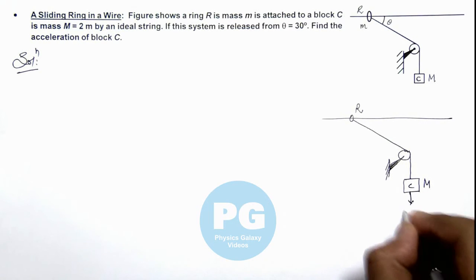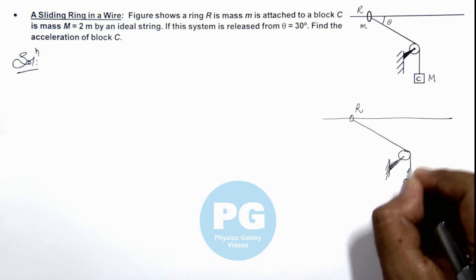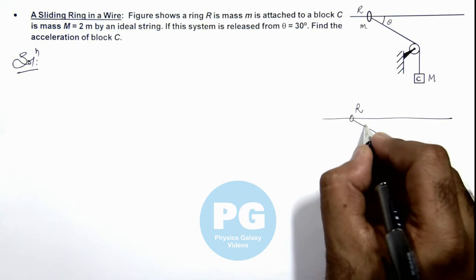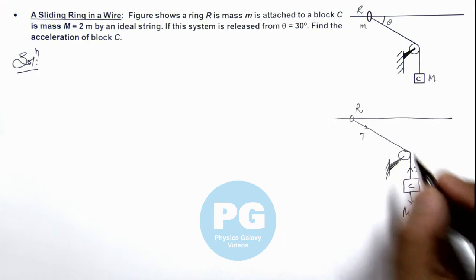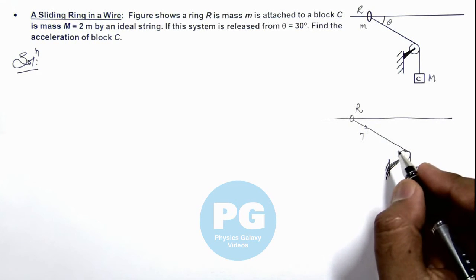So it is experiencing its weight mg and a tension T is opposing it. And for ring, tension is the force due to which it will have a moving tendency.